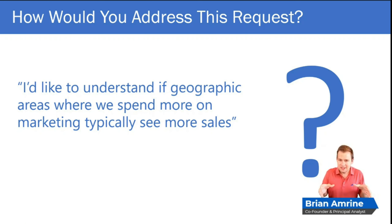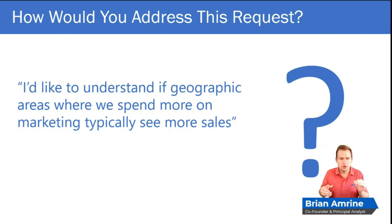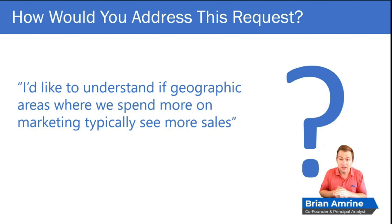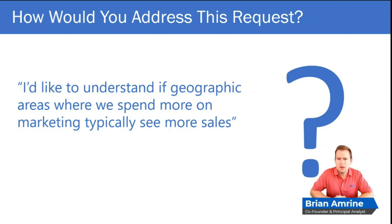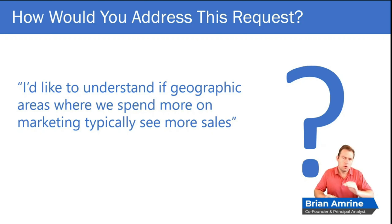When I hear that, I automatically go to a data science model. What we might do is create a dataset that is one row per geographic area. The more granular you can get, in general, the better read you get — a model benefits from having a lot of different data points. A lot of times marketing spend, especially on commercials, is done at the DMA level — the Designated Marketing Area level — so we might have a dataset that's one row per DMA.